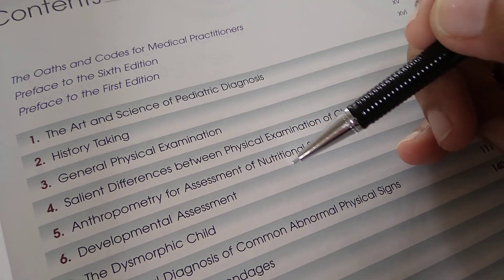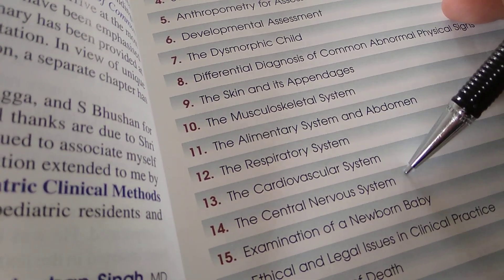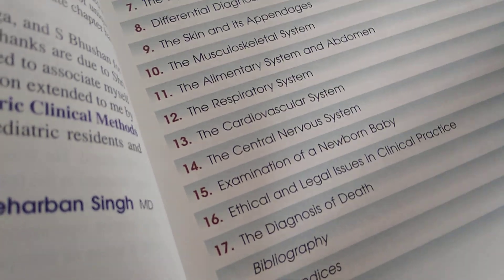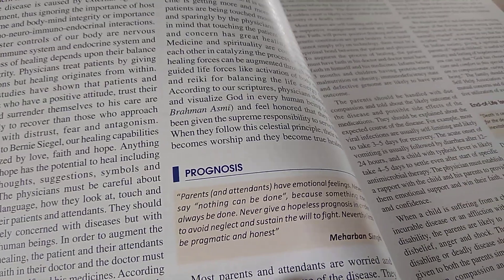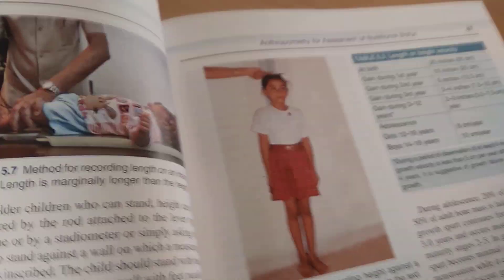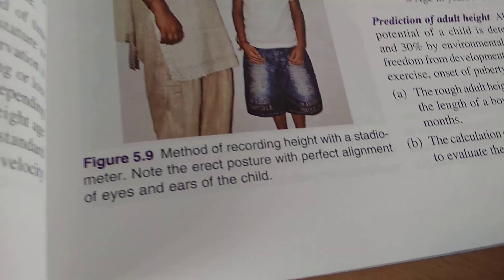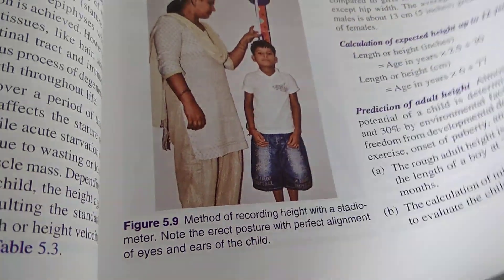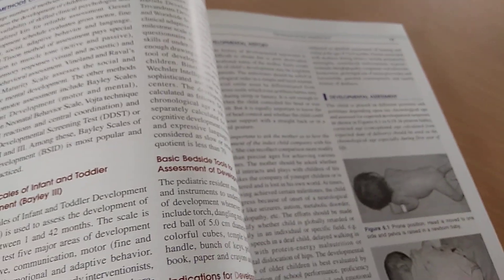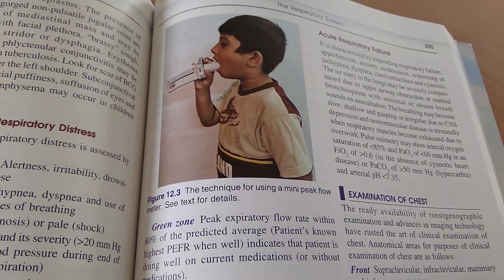The contents cover history taking, anthropometry, skin, musculoskeletal system, respiratory, cardiovascular, central nervous system, and how to examine a newborn. There's also immunization schedule and anthropometry. This instrument is called an infantometer, and this one is a stadiometer. What is this? A peak flow meter - a mini peak flow meter.